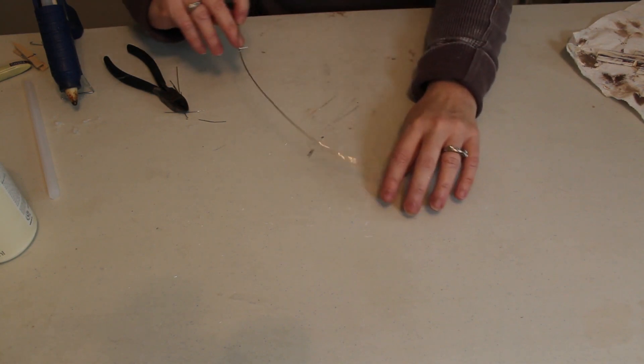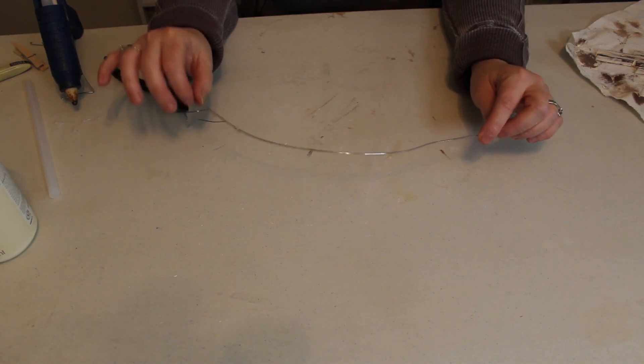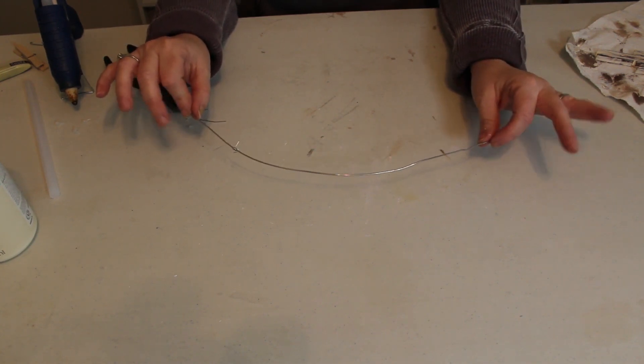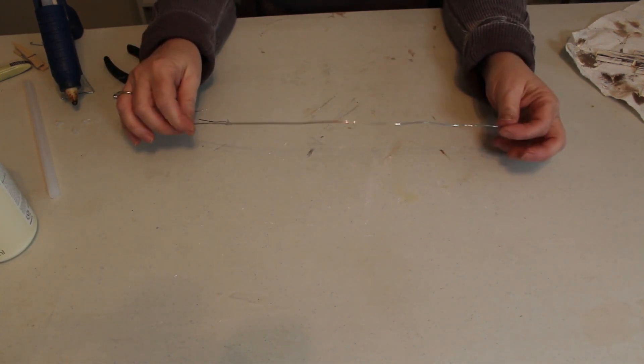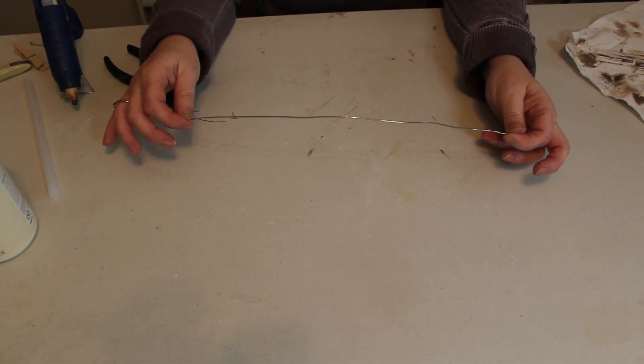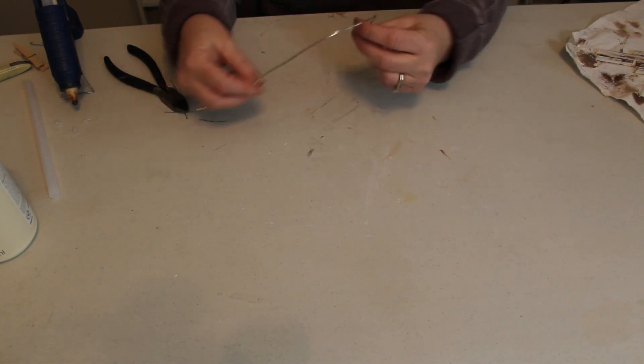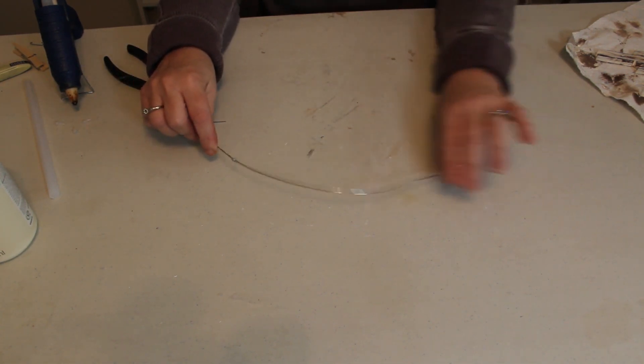Now I want to make a crown of thorns and my sister told me the way she did it was she cut a piece of wire and she wrapped other wire around it to make barbed wire. So I had this piece I think it's probably 18 or 20 gauge wire. I'm not sure and I think that it'll be about the right length once I finish with it.